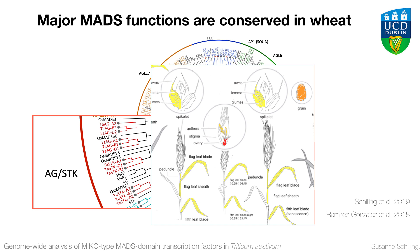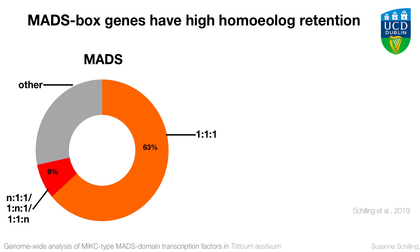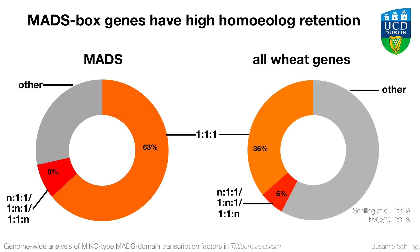What we find very often is this one-to-one-to-one ratio: one gene in the A genome, one in the B, and one in the D genome. When we look at an overall picture for all the MADS-box genes, we see that almost one-third is in this one-to-one-to-one ratio. Sometimes we get what we call in-paralogs — a secondary duplication of one gene. Whereas if you look at overall wheat genes, it's only about 40% that are in this constellation. This underlines the significance of these genes, and obviously there is an evolutionary incentive to keep all three homeologs.